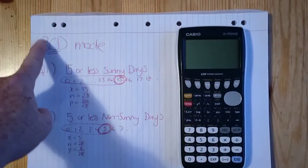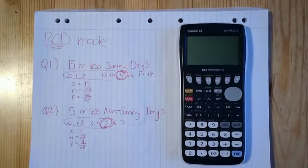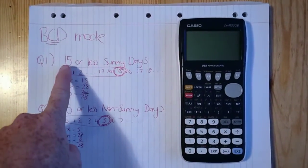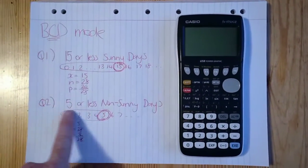So BCD mode, the C stands for cumulative, and this is the type of binomial distribution question where we're finding the range of numbers. So it's not an exact question.